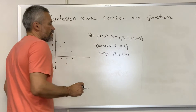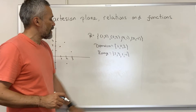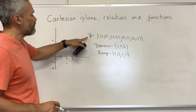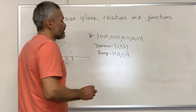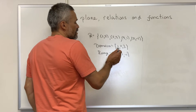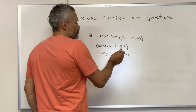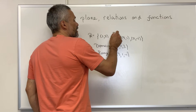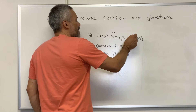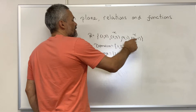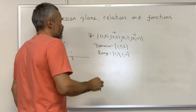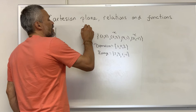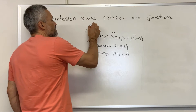The domain is the collection of first entries. And we can also decide if this relation is a function. Notice that in this case, for the number 2 — 2 is an element in the domain — and it appears twice in the relation as a first entry. For that reason, this relation is not a function.